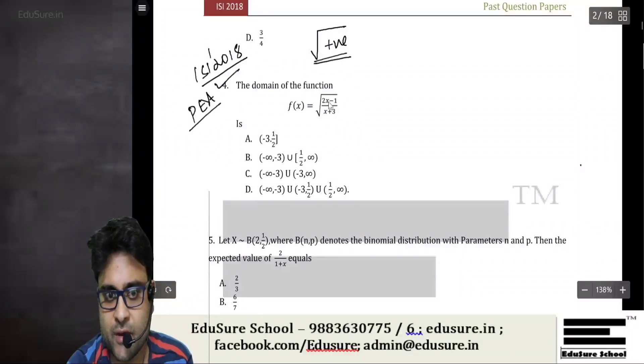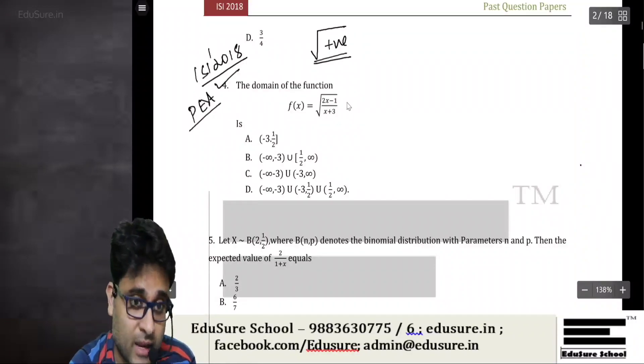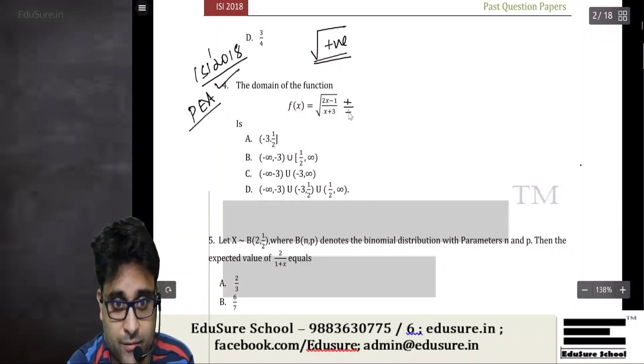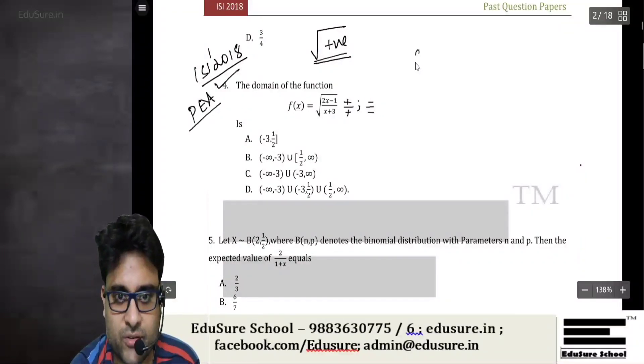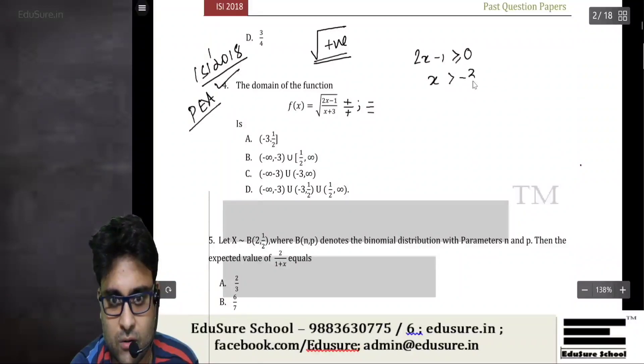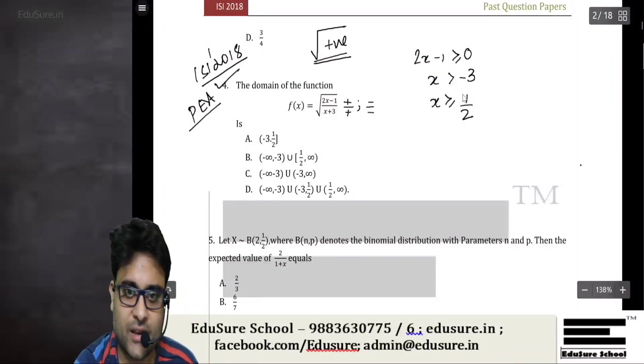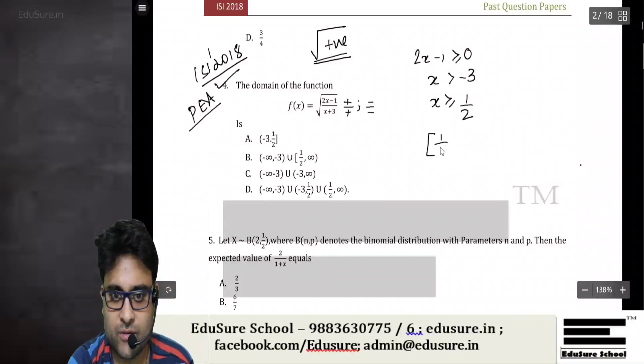Okay, so if I consider both are positive, then 2x-1 ≥ 0, and the denominator cannot be equal to zero. So these are the two possibilities: x ≥ 1/2 and x > -3. If I combine both of them, I'll get [1/2, ∞).